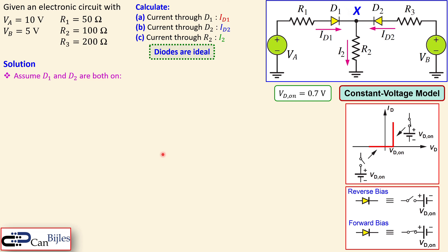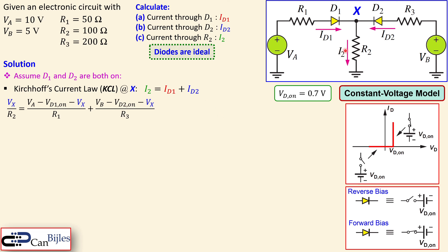I designate node X and start the analysis using Kirchhoff's Current Law — the node voltage analysis at node X. I develop the current equation: ID1 and ID2 together produce I2, so I2 equals ID1 plus ID2. ID1 is VA minus VD1_on minus VX divided by R1. The current in D2 is VB minus VD2_on minus VX divided by R3, again assuming D2 is on and conducting.